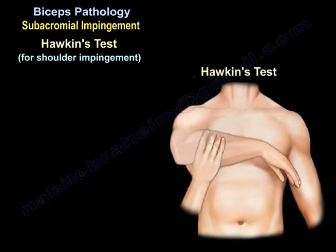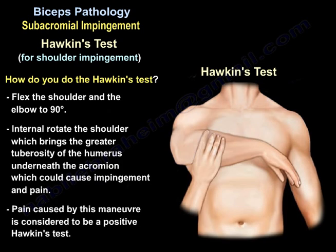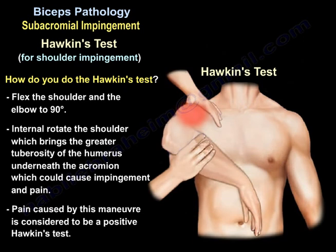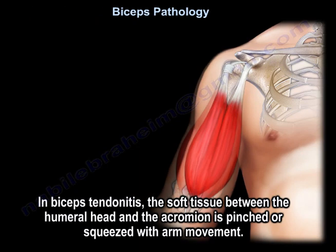How do you do the Hawkins test? Flex the shoulder and the elbow to 90 degrees, then internally rotate the shoulder. This brings the greater tuberosity of the humerus underneath the acromion, which could cause impingement and pain. Pain caused by this maneuver is considered a positive Hawkins test.